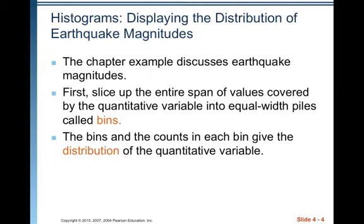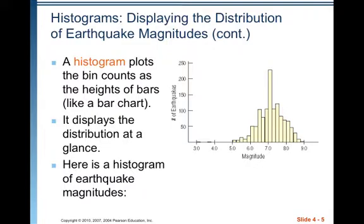Histograms — displaying the distribution of earthquake magnitudes. This chapter example discusses earthquake magnitudes. First, slice up the entire span of values covered by the quantitative variable into equal-width piles called bins. The bins and counts in each bin give the distribution of the quantitative variable. The calculator will divide the data up for you into bins. A histogram plots the bin counts as the heights of the bars, just like a bar chart, and it displays the distribution at a glance.